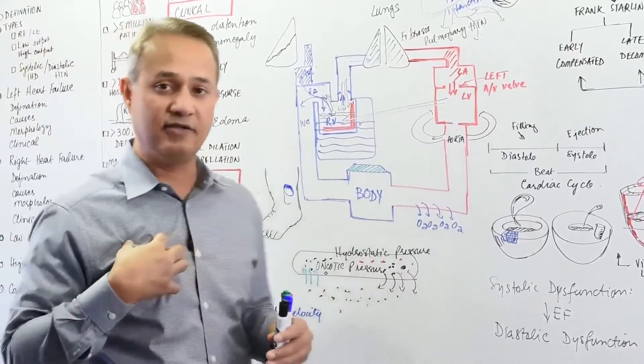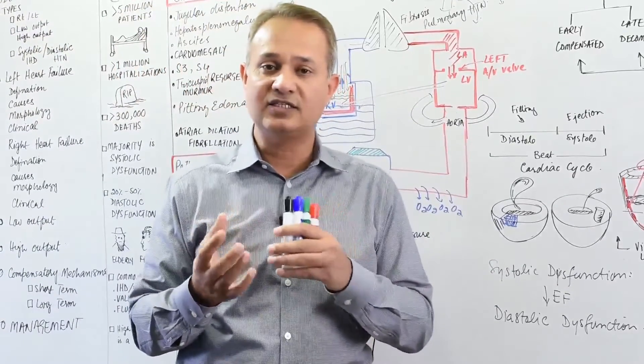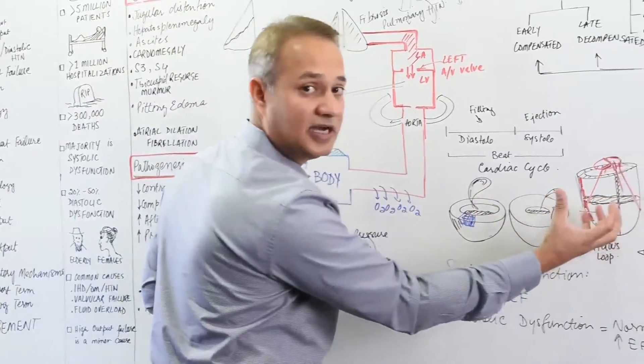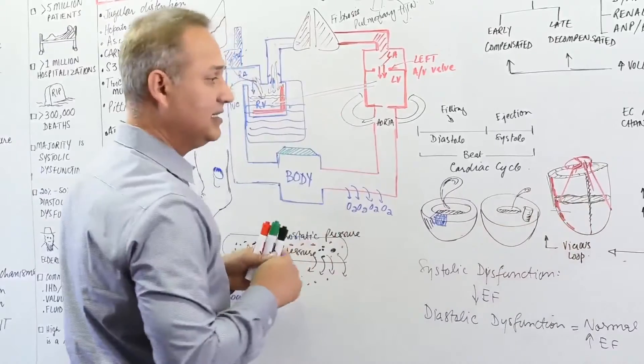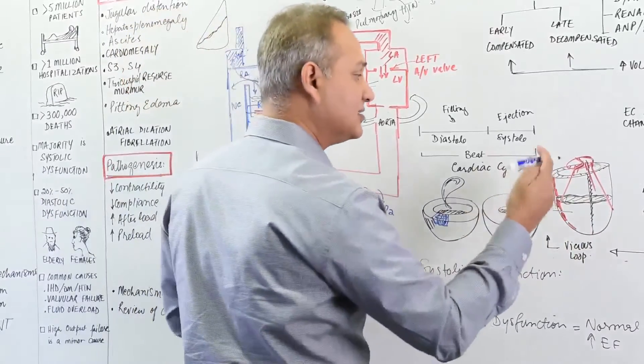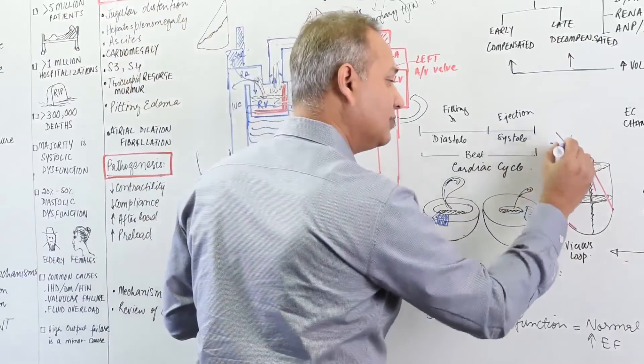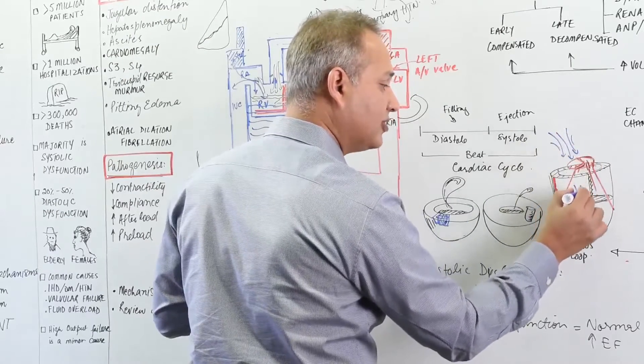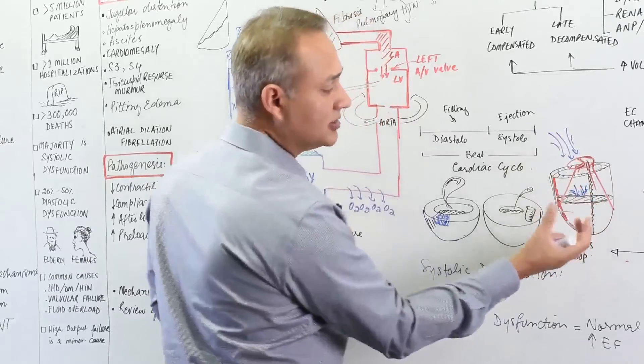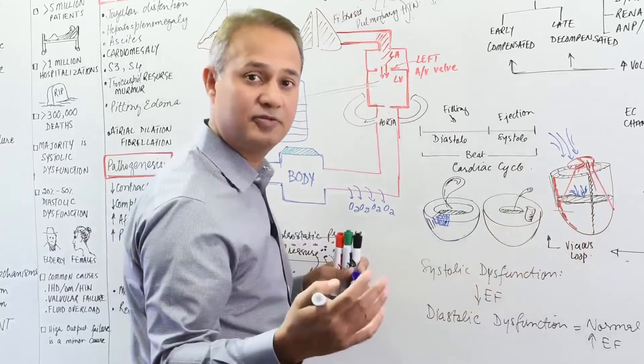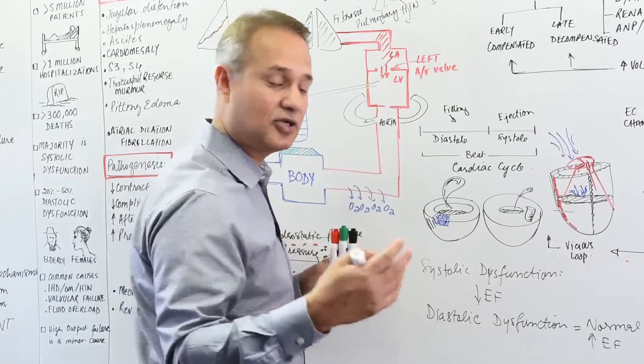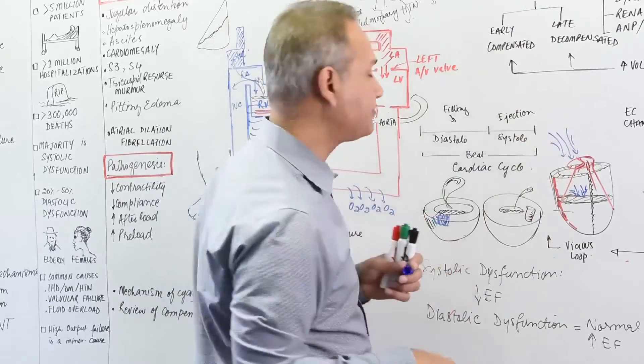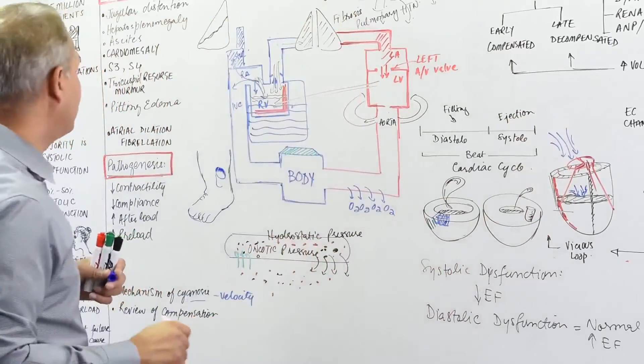Then what would happen to the heart itself? You would be able to hear S3 and S4 gallop. Why? Because the heart has become bigger in size, there is increased volume of blood. As the AV valve opens and the blood falls into the ventricle, it is going to cause lots of ripples. Those ripples, because of the already pooled blood, would be heard. Early diastolic is S3. Late diastolic is when atria contracts and pushes more blood and causes the ripple - that would be S4.